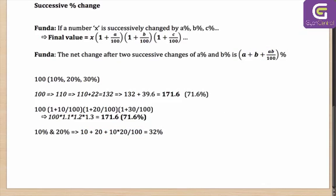Now, some of you might think: will this also work in the case of negatives? Yes, it will. Let's take the example of a particular shop which offers you a 40% discount and then a 60% discount after that. What is the net percentage change?